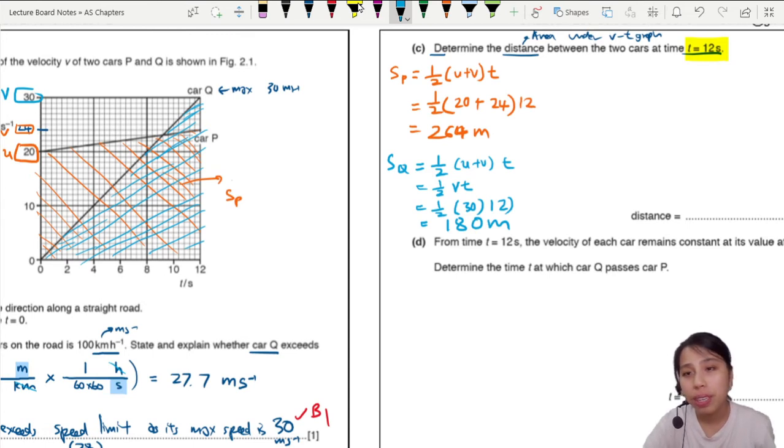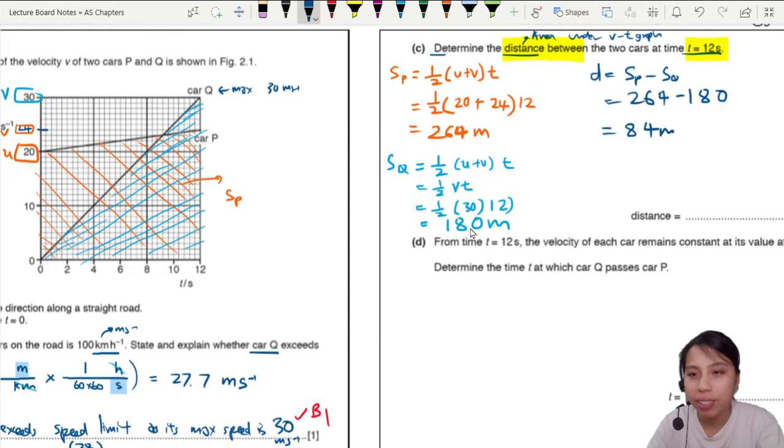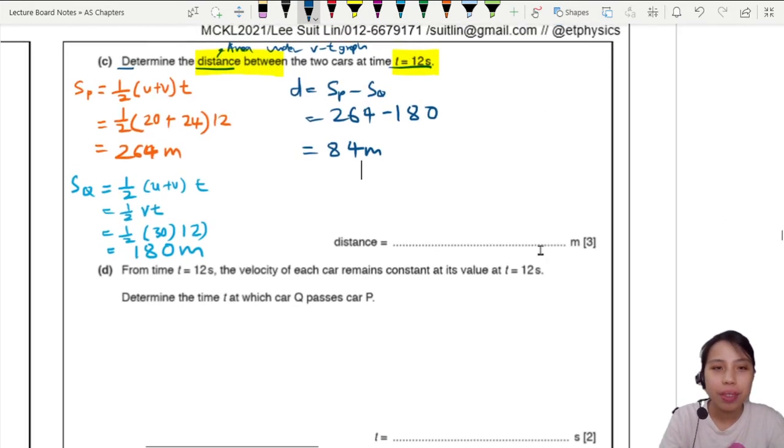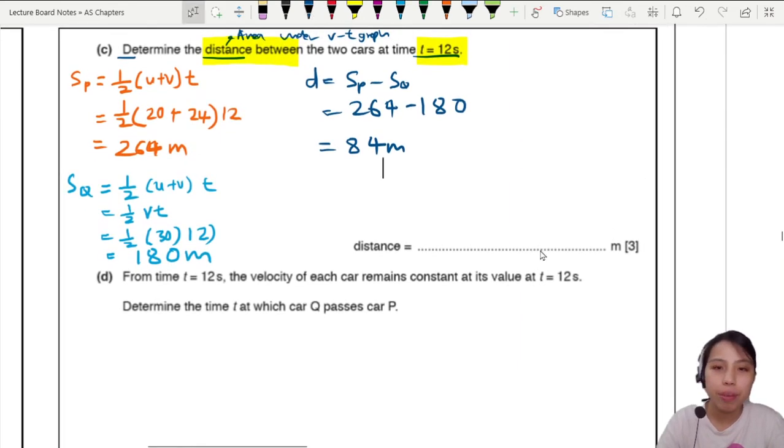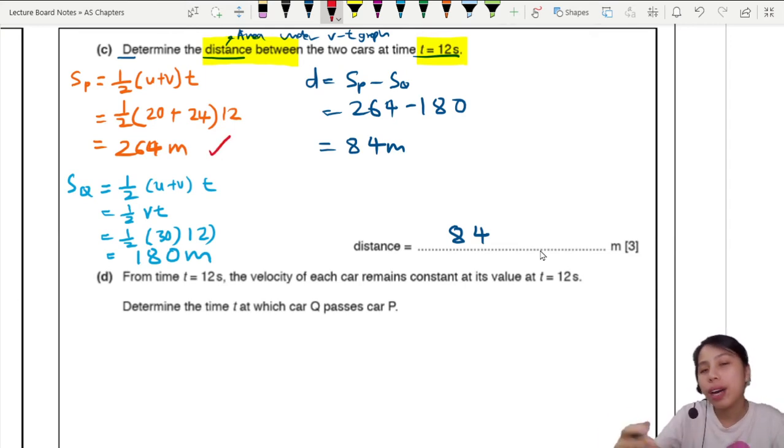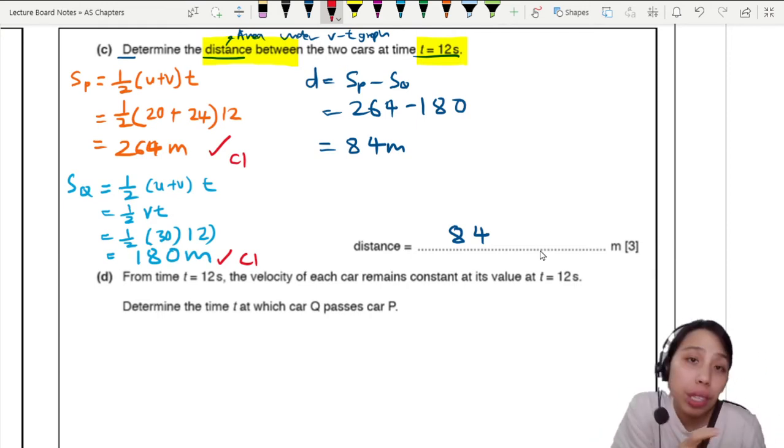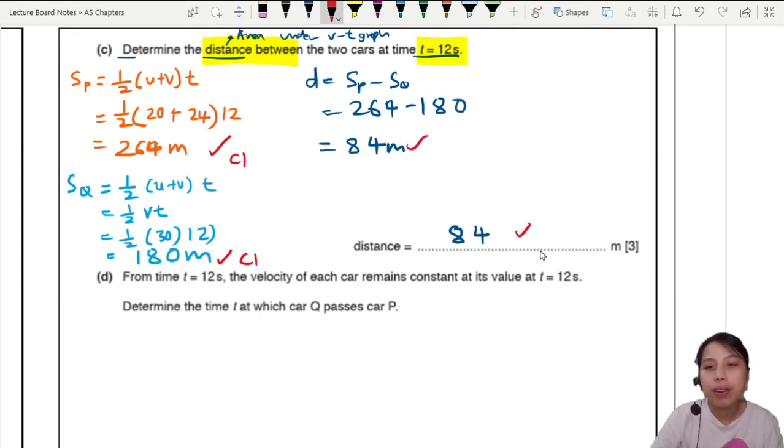But we're not done yet. We just found the displacement. What they want is the distance between both cars. One car travel 264. The other travel only 180. Not very far. So then, the last step is to find the distance between, I'm going to take, let's call this distance D. SP minus SQ. So 264 minus 180. That's going to give us 84 meters. That's how far apart they are. And let's write this down here. I guess we could stick to 2SF. Everything looks like a 2SF game. So we're going to stick to 2SF. 84 meters. 3 marks here.